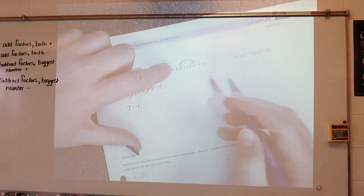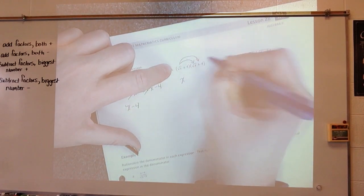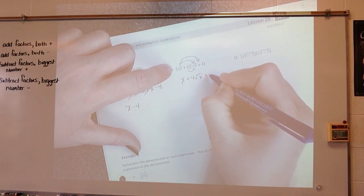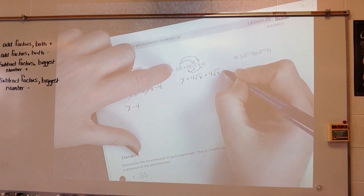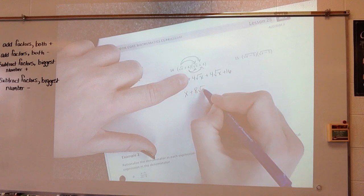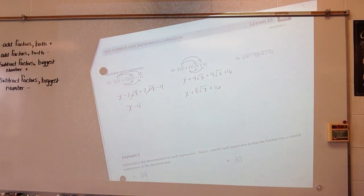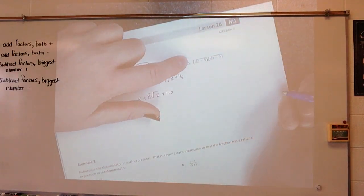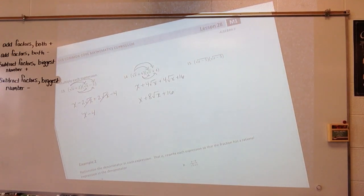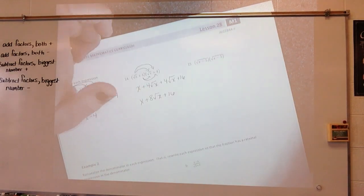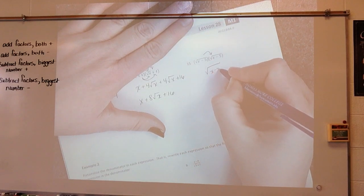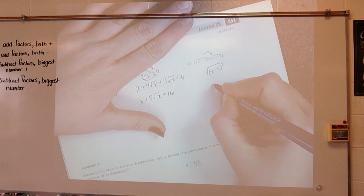Same thing here: square root of x times square root of x is x. Square root of x times 4 is 4 square root of x. 4 times square root of x is 4 square root of x. And 4 times 4 is 16. So I have x plus 8 square root of x plus 16. When I multiply x minus 5 times x minus 5 all under one square root, I get the square root of x minus 5 squared, which is x minus 5.